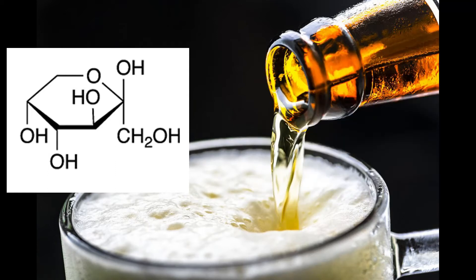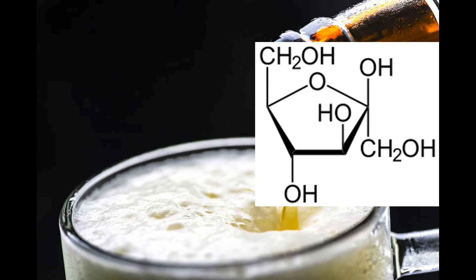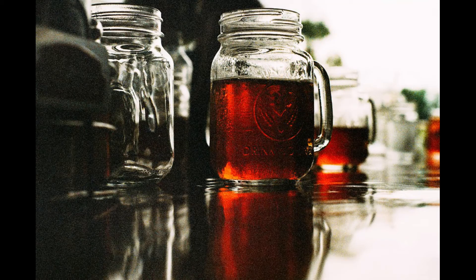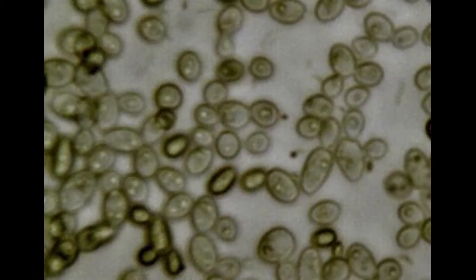Of the two, glucose is far more readily fermented by yeast and as such is given priority, leaving behind fructose. Fructose has a very high relative sweetness in comparison to both glucose and sucrose — it is more than twice as sweet as glucose and nearly twice that of sucrose. Fructose can be anaerobically fermented, and either of these reactions will produce CO2 and ethanol.